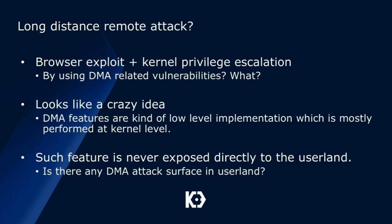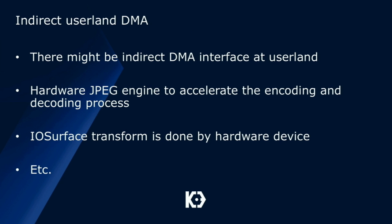Is it possible to make this a long-distance attack? For example, using a browser exploit to launch it remotely together with a kernel privilege escalation bug and DMA-related bugs. That looks like a very crazy idea because DMA features are low-level, mostly performed at the kernel or device level, not exposed to user land directly. However, there might be some indirect user land DMA paths. For example, on iOS there is a JPEG engine responsible for accelerating encoding and decoding, and another scenario is the IOSurface transform, which is done by a hardware device called the Scaler device.